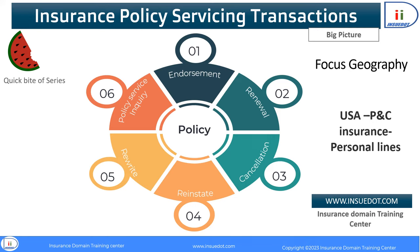Hi, welcome to our quick bite series. We are releasing quick bite videos to grab knowledge on specific concepts within a few minutes. This video delves into insurance policy service transactions, specifically focusing on those applicable to personal lines property and casualty (P&C) insurance within the USA, after a policy is issued for cars, homes, and personal articles.